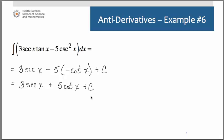As we've seen before, please do take a moment to take the derivative of your answer and you should notice you get the integrand back again. Derivative of secant is secant tangent, derivative of cotangent is negative cosecant squared, so you can be assured that you're getting these correct.